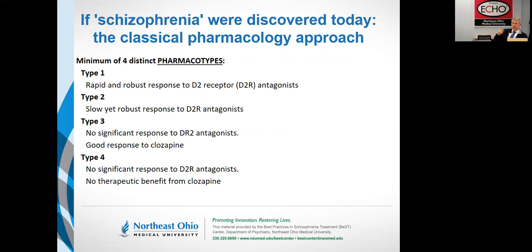As I'll show in a moment, that subtype very easily maps to biomarkers of high dopamine signaling. Type two is slow yet robust — people can have a very good recovery, but the time frame of recovery unfolds over months rather than weeks. Type three is no significant response to traditional dopamine blockers (non-clozapine antipsychotic drugs), but having a good response to clozapine. In type three and four, that represents about 30% of the population, and about half of those will be in type three having a good response to clozapine. Type four is not responding well to traditional drugs and not responding well to clozapine. Arguably, a type five is in there: a lithium-responsive schizophrenia, which was researched in the 70s and 80s and kind of vanished from attention.